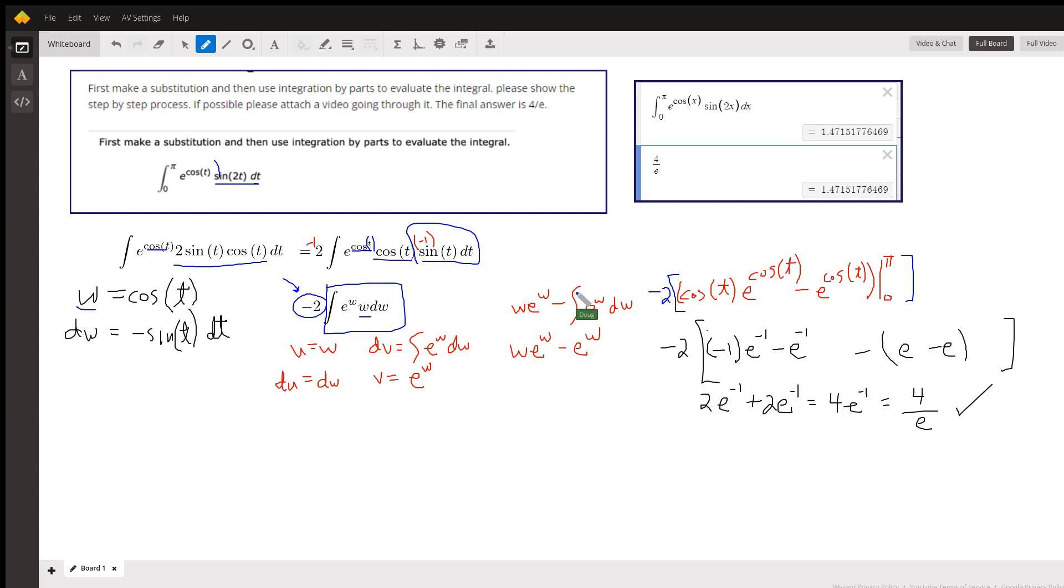Integration by parts says uv, so w e to the w minus... By the way, I left off the limits of integration for the time being. We're going to get the antiderivative. The antiderivative here is e to the w, so there is the antiderivative.